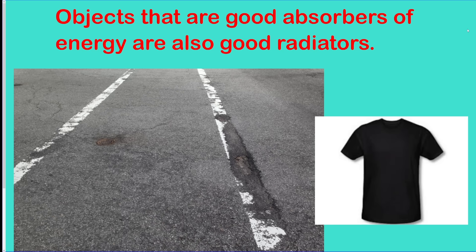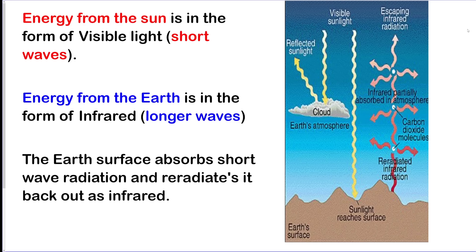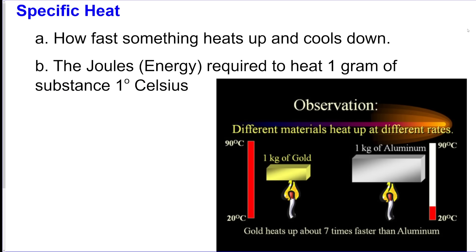Objects that are good absorbers are also good radiators. Dark colored and rough texture is your best absorber and a good radiator of heat. The big thing to know: energy from the sun is in the form of visible light, which is shortwave radiation. That energy hits the ground and is re-radiated out of the earth as longwave infrared heat — it takes in the UV and spits out the infrared.